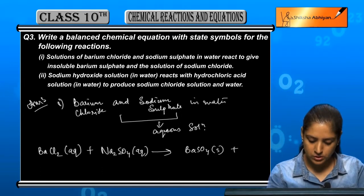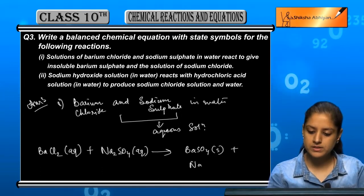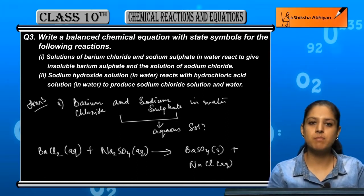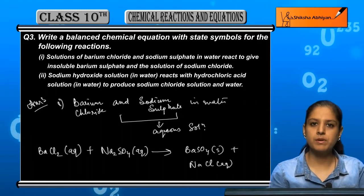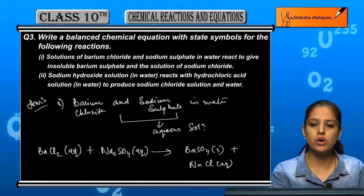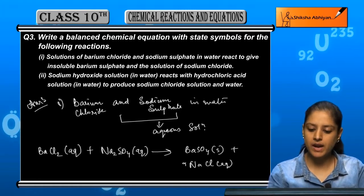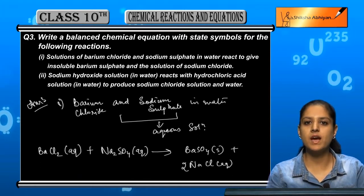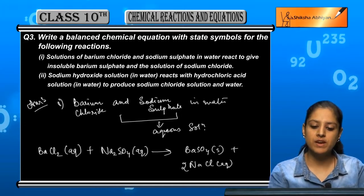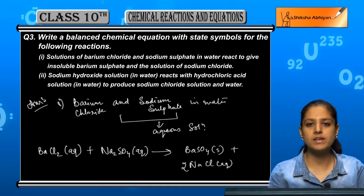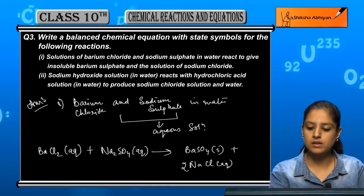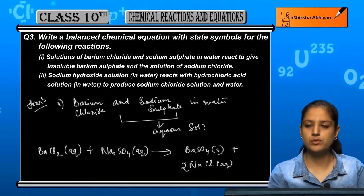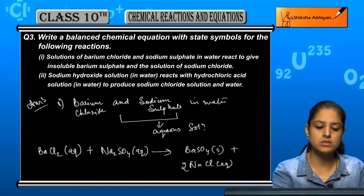And then we have sodium chloride NaCl as an aqueous solution. Now let us check if it is balanced. Ba is 1 on left and right. Cl is 2 on left, 1 on right, so we put 2 to balance. Now Cl is balanced, Na is 2 on both sides. SO₄ is 1 on both sides. So ultimately it is a balanced chemical equation.